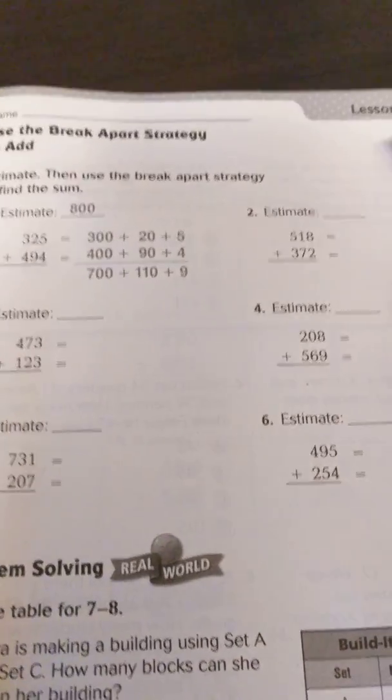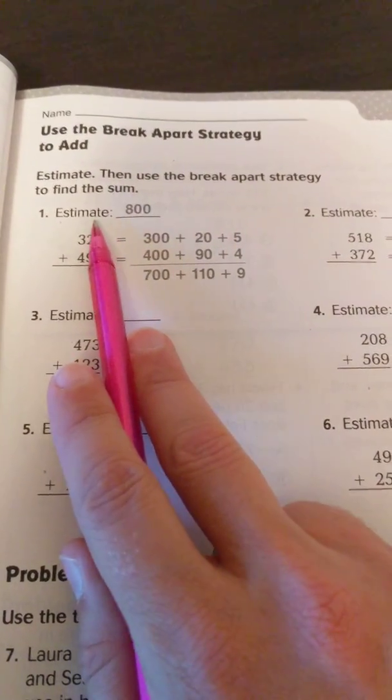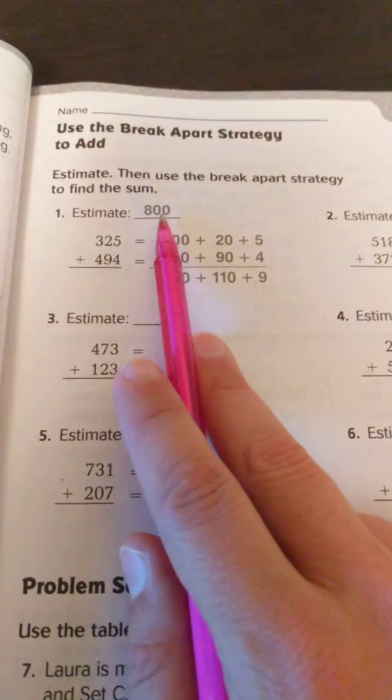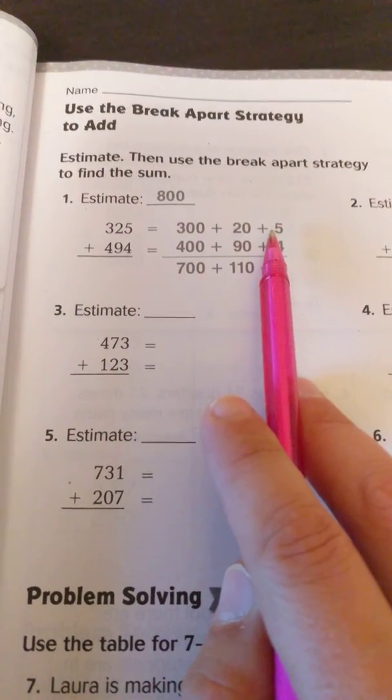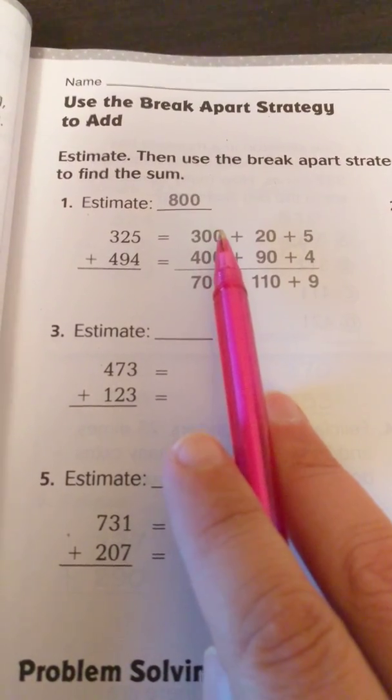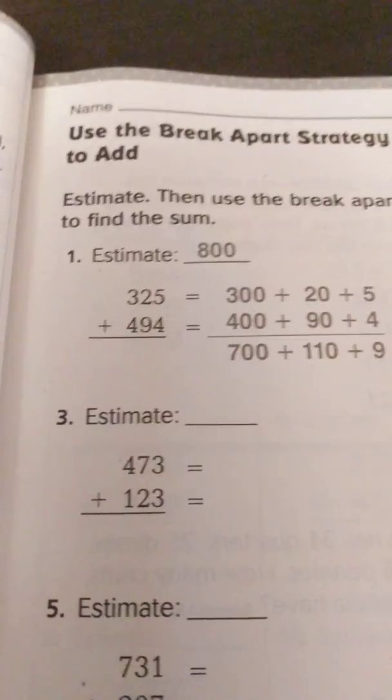So if we look across 1 through 6 here, in all these problems we have estimate and then a blank, except for the first one where the answer is given to us for the estimate. We're going to estimate first, then we're going to break apart the numbers into what's called expanded form. And this is something that you did in some form in first grade and second grade, and now we see it again in third grade.